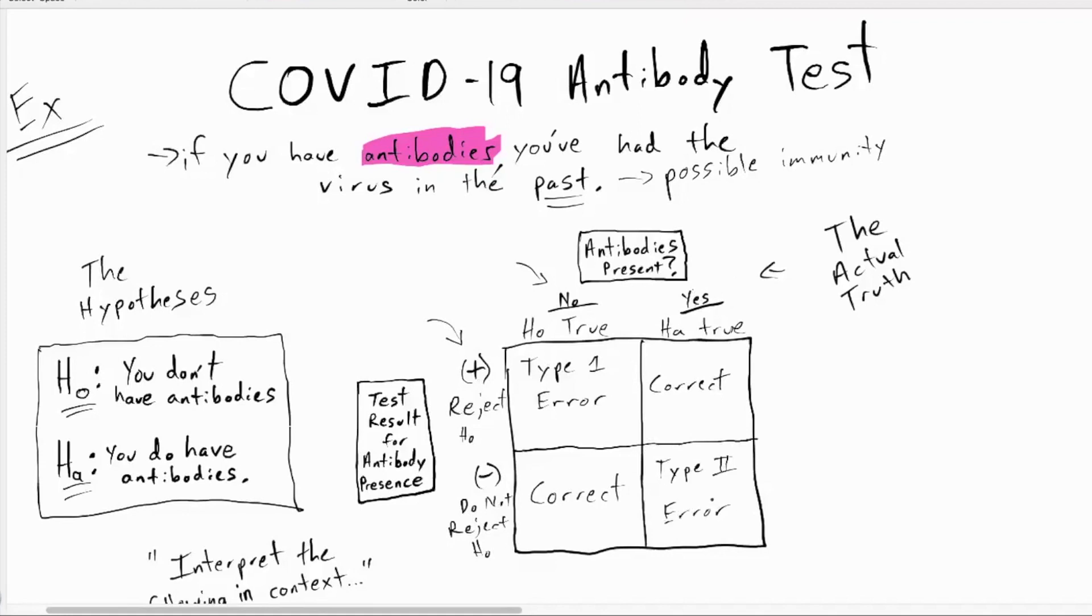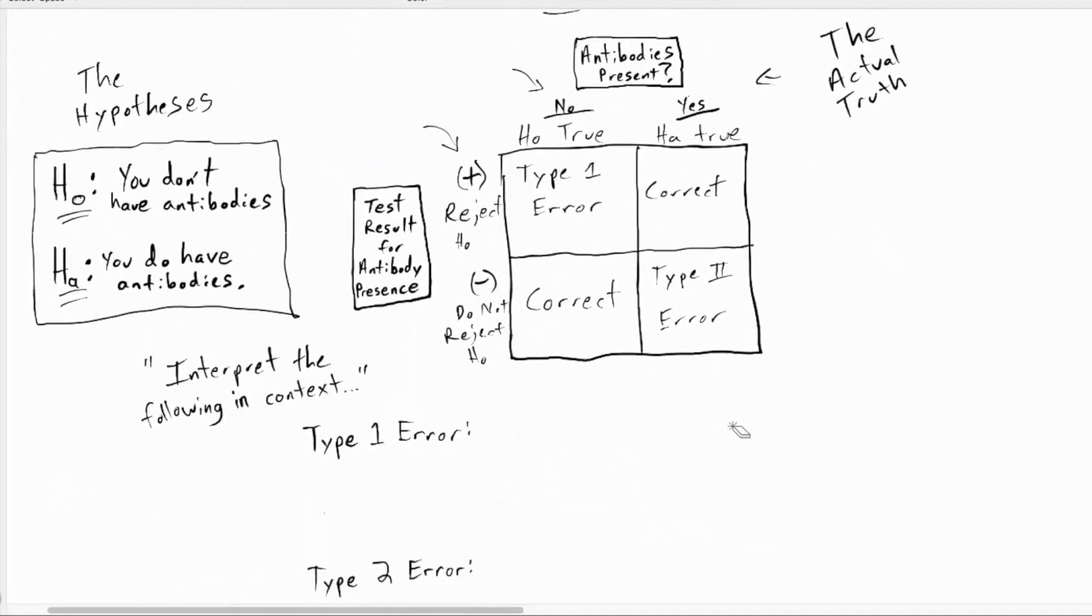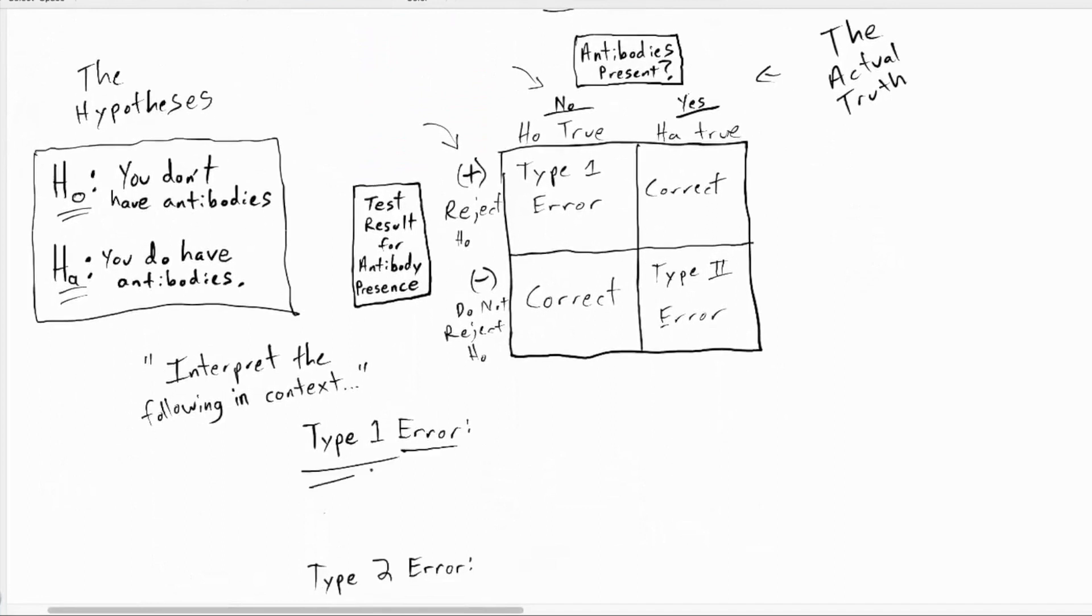What can go wrong can go wrong in these different types of ways. They are quite different in terms of the risks and the consequences of them. Something I might ask you to do, interpret the following. Describe what a type one error means for this particular situation. Explain it not using stat terms. You're going to be talking about antibodies, your test results, and the truth. A type one error would be you test positive while the truth is that you don't have antibodies. And there's another name for this too, called a false positive. It's telling you that something is going on when really it's not.